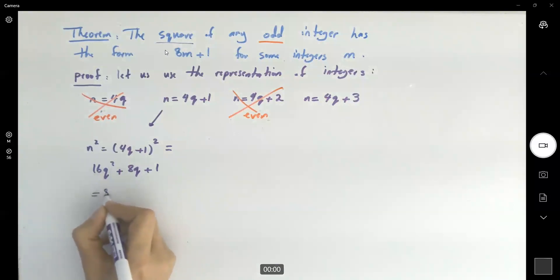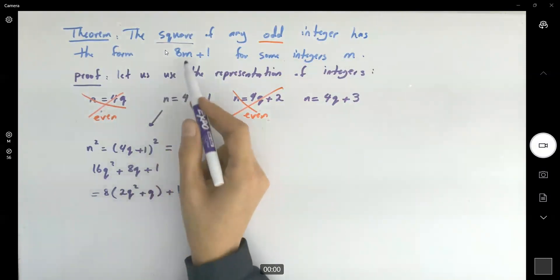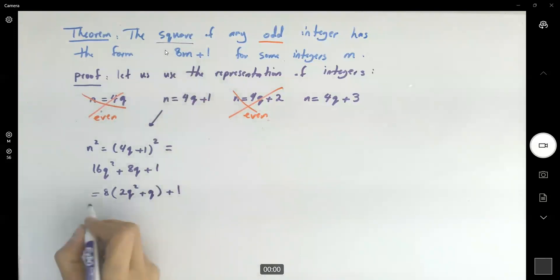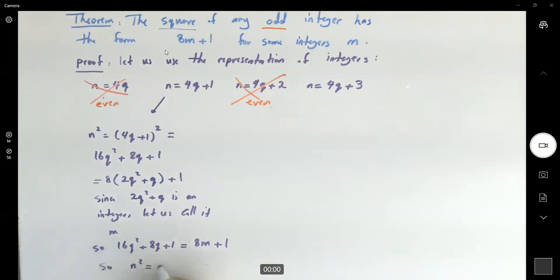If I factor out 8, I get 2q squared plus q plus 1. But here you have an integer. 2q squared plus q can be represented by m, some integer. Since 2q squared plus q is an integer, let us call it m. So 16q squared plus 8q plus 1 is equal to 8m plus 1. So we just showed that n squared is 8m plus 1.